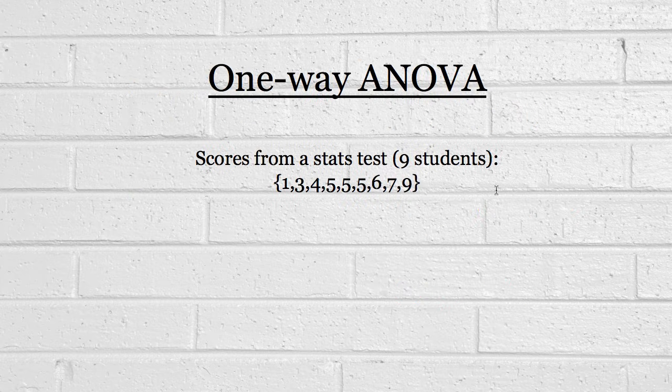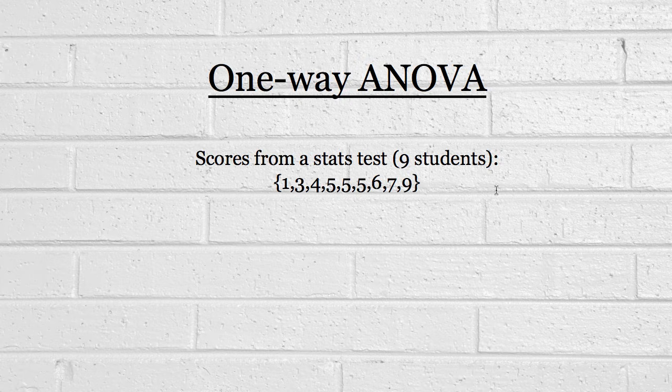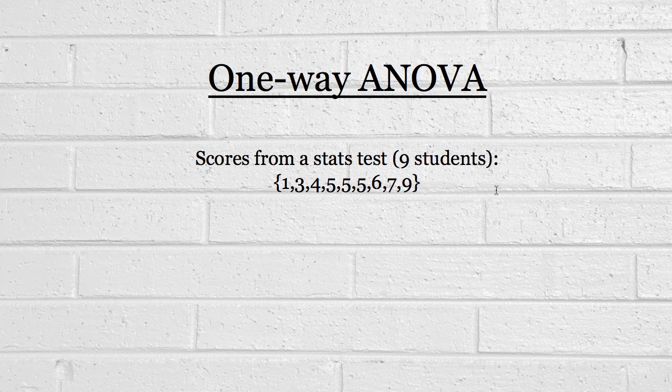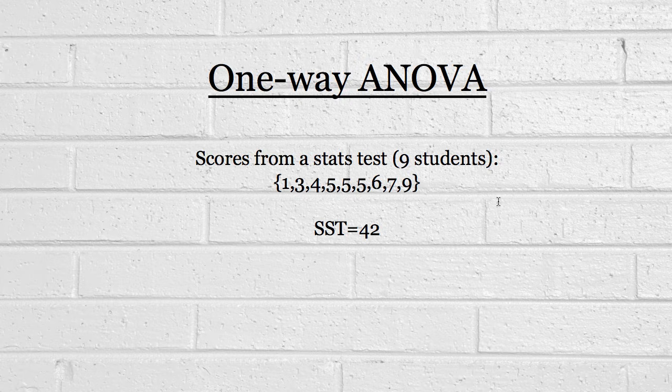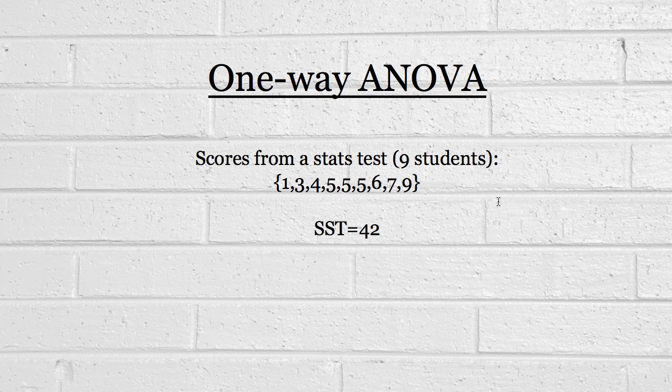So, let's have a look at what one-way ANOVA actually is. We're going to use this example now, which is a theoretical stats test where there were nine students. You can see the top score was nine, perhaps out of ten, and the bottom score was one. And there was lots of scores in between. The first step is always to calculate this total sum of squares. That is the variance. That's the variation, I should say, that we're actually dealing with, which we're going to try to explain. And the total sum of squares in this case is 42.